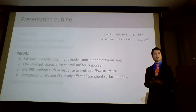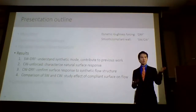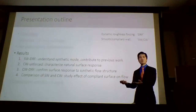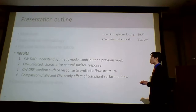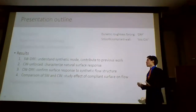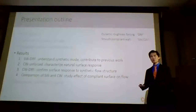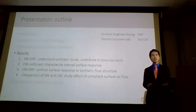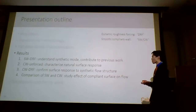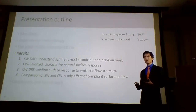Now we are equipped to discuss results. There are two elements of complexity: dynamic roughness on or off, and compliant surface versus smooth wall. We add each one at a time. First, we look at dynamic roughness alone with a smooth wall to understand the synthetic mode. Next, we look at the compliant wall without dynamic roughness to understand the natural surface response. Then we combine them — compliant wall with dynamic roughness forcing — to confirm we get a surface response from our synthetic mode. Finally, we compare flows over smooth and compliant walls to understand the effect of the compliant wall.